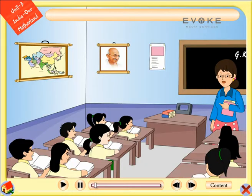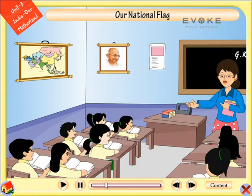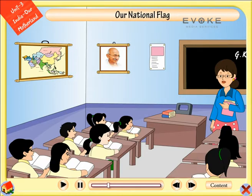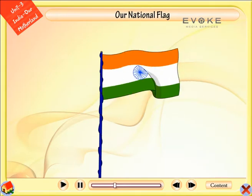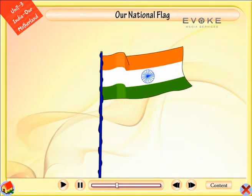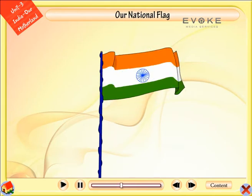Unit 3: India, our motherland. Lesson: Our National Flag. Our national flag is called the Tricolor. Our national flag has three colors in it: saffron, white, and green. It also has a blue colored chakra in the center.